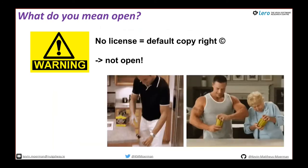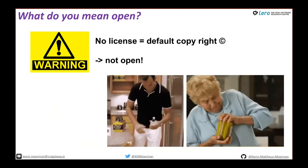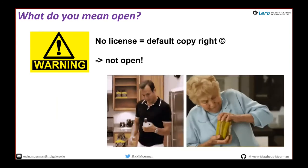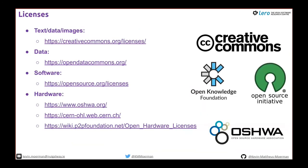No license often defaults to copyright, so if someone puts code online without a license you're still not allowed to copy and modify it. You need to add a license. For text, data, and images — what I call content — Creative Commons licenses are best. For software, the best licenses are listed and approved by the Open Source Initiative. For hardware, the Open Hardware Association has licenses listed. Data and hardware licenses are a relatively new development; software licenses are very well established.